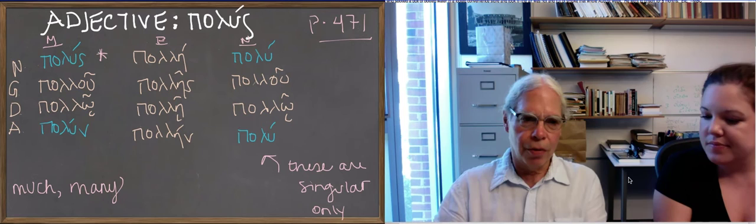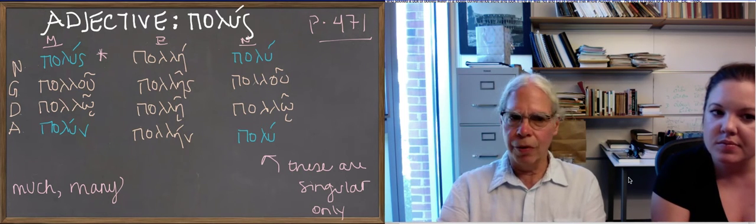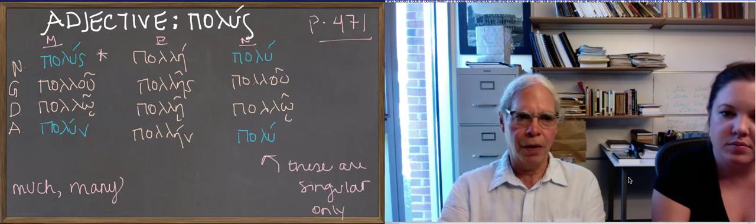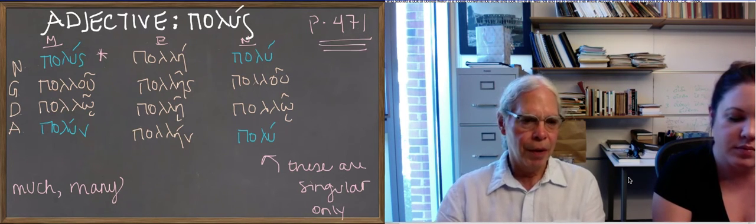Okay, so it's an example of a type, and it's a good one to learn. The plural forms are all like ἀγαθός and based on the stem with two lambdas, not the one. Okay, all right, so the next thing we want to look at, and the last thing in this lesson, is the word for ship.